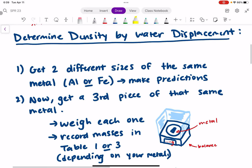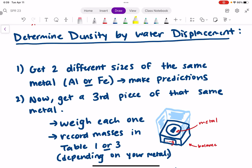For the first part of this lab, we're going to be determining the density of our metals using water displacement. The first step is to get two different sizes of the same metal. It can be aluminum, or you can start with iron, and you're going to make predictions about those metals.